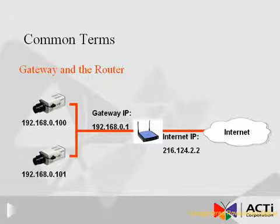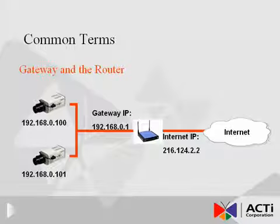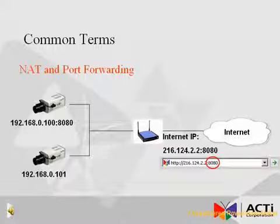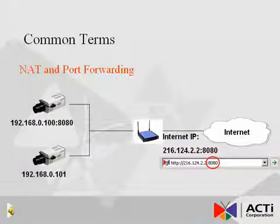The router usually consists of two separate IPs, each compatible with its respective network. In the diagram shown, the router has a gateway IP and an internet IP. The gateway IP is used for communications with devices on the LAN, where the internet IP is used to communicate with the outside world. The router also often acts as a physical firewall, a defense mechanism designed to block potential inbound attacks.